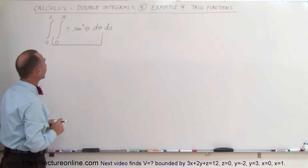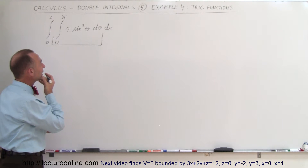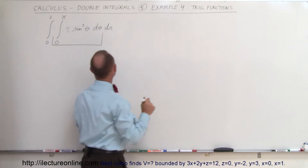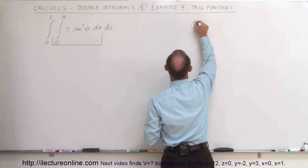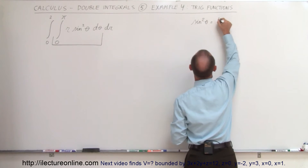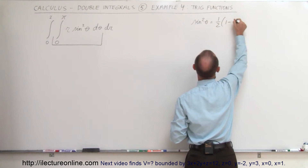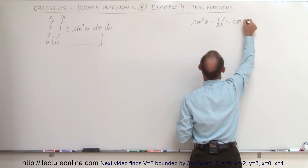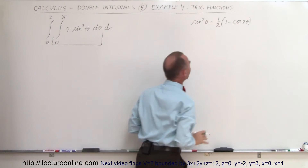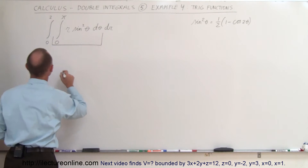Sine squared of theta — how do we integrate that? I know a trig identity: sine squared of theta is equal to one half times (1 minus the cosine of 2 theta). We're going to use this trig identity because that will make this a whole lot easier to integrate.